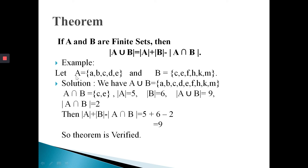For example, we have two sets A and B. The elements of set A are {A, B, C, D, E} and the elements of set B are {C, E, F, H, K, M}. So when we take the union of set A and set B, we get all elements {A, B, C, D, E, F, H, K, M}.